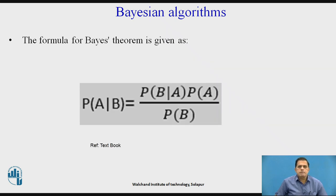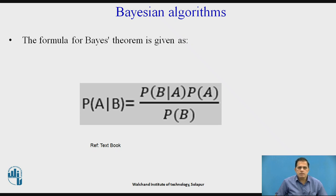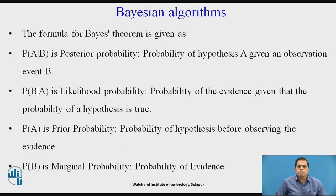Before that, let us discuss the Bayes' theorem formula. The formula for Bayes' theorem is given as: probability of A given B equals probability of B given A, multiplied by probability of A, divided by probability of B. Here A and B are two events. The posterior probability is P(A|B), the likelihood probability is P(B|A), the prior probability is P(A), and the marginal probability is P(B).